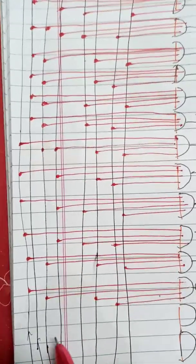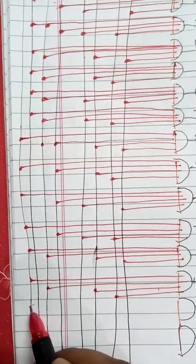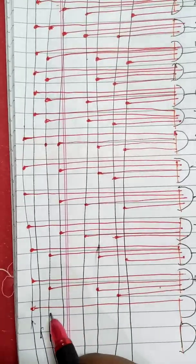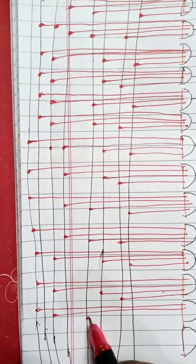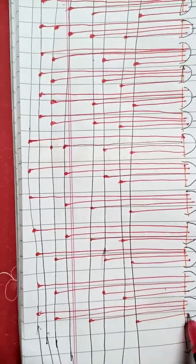For E, the binary is 1110. So 1, 1, 1, 0.